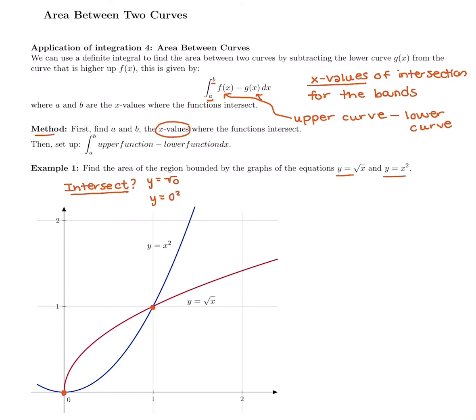If you're confused about intersecting, plug them in and see if plugging in that x value gives you the same y value for both. The square root of 0 is 0, and 0 squared is 0, so they have the same y value when they intersect at 0. The square root of 1 is 1, and 1 squared is also 1. So those two x-values of 0 and 1 are definitely the two values where they intersect.